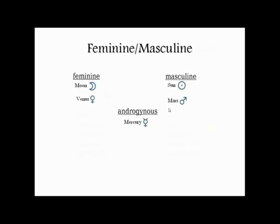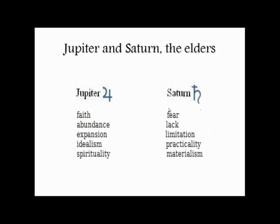When we get to Jupiter and Saturn, we're getting to planets that are clearly a totally different category — they're the gaseous giants. Mercury, Venus, Earth, and Mars are all little solid terrestrial planets. It is all those little planets plus the Sun and Moon that constitute these very basic elements of our being that we're constantly using in our day-to-day self-expression.